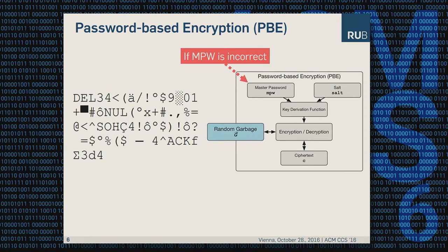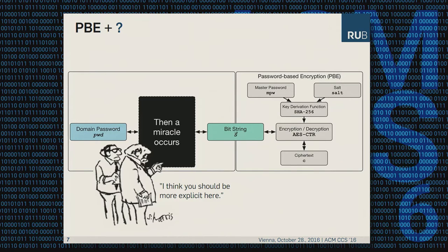So how can we implement such a cracking-resistant password vault? Of course we start with password-based encryption. But if you use an incorrect master password, the output of the KDF will not be the correct key, and if you try to decrypt the ciphertext, you end up with random garbage. So it must be something more than password-based encryption. We need a block cipher and mode of operation that allows decryption under any key, resulting in a bit string indistinguishable for every key used. This bit string is inserted into a magic black box and the output is a domain password — this concept is called Honey Encryption.